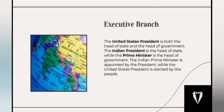Next is the executive branch. The United States president is both the head of state and the head of government. In India, the president is the head of state while the prime minister is the head of government. The Indian prime minister is appointed by the president, while the United States president is elected directly by the people.